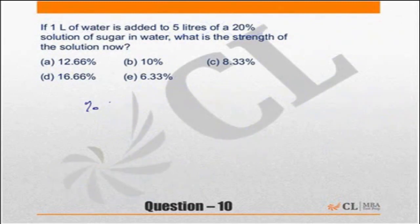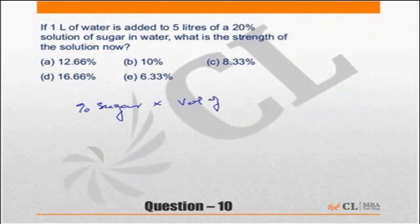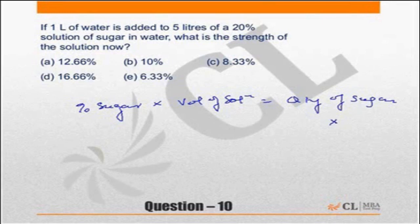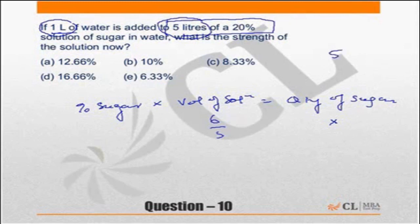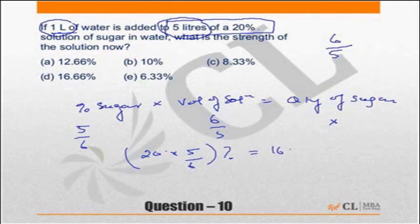Going back to the previous question about sugar mixture: percentage of sugar multiplied by volume of mixture equals quantity of sugar. There is no change in the quantity of sugar because you are adding water to a 5-litre 20% sugar solution. Original volume was 5 litres; after adding 1 litre of water, volume becomes 6 litres, which is 6/5 times the original. Since quantity of sugar doesn't change, the percentage of sugar becomes 5/6 times the original: 20 × (5/6) = 16.6%.